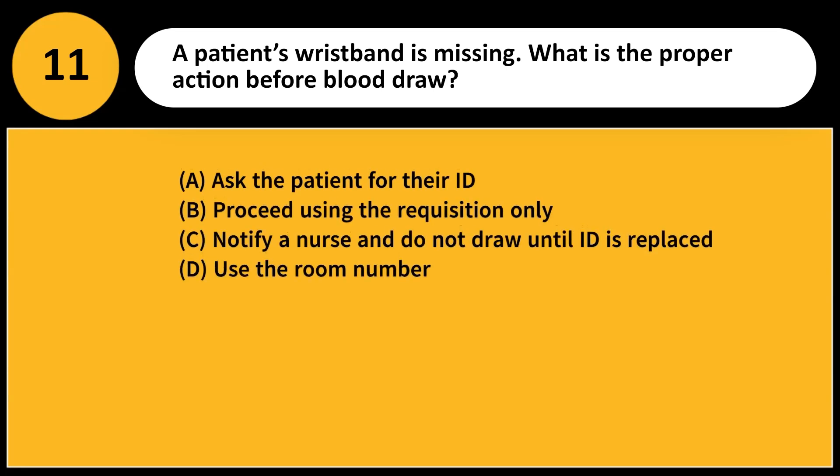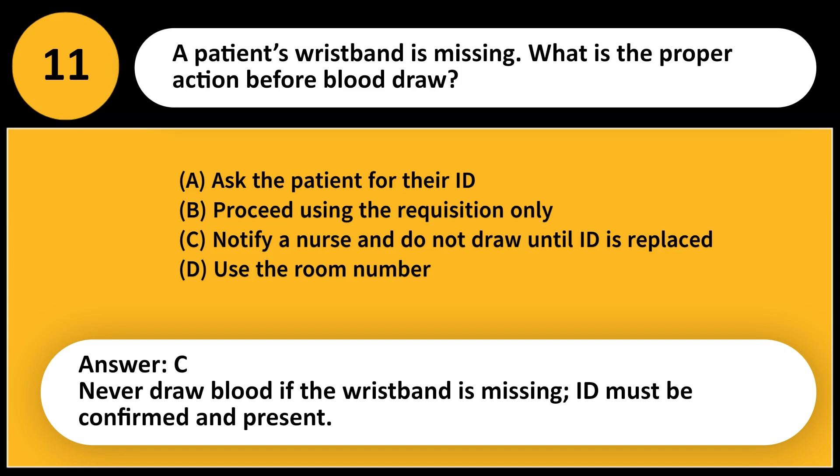A patient's wristband is missing. What is the proper action before blood draw? A. Ask the patient for their ID. B. Proceed using the requisition only. C. Notify a nurse and do not draw until ID is replaced. D. Use the room number. Answer: C. Never draw blood if the wristband is missing; ID must be confirmed and present.